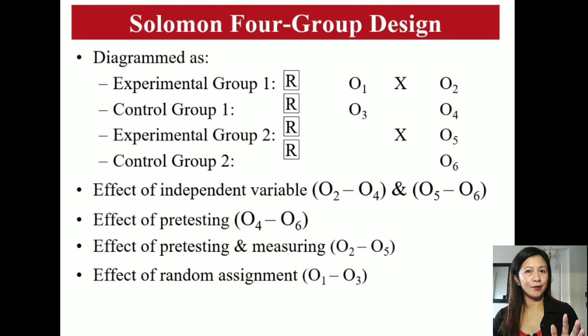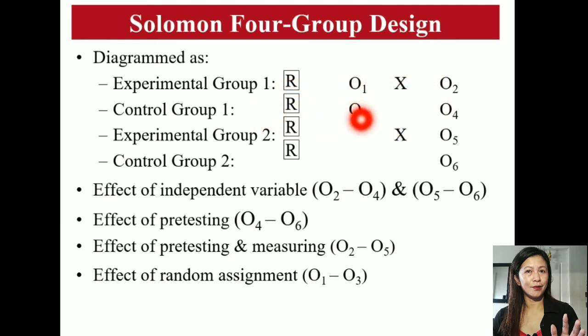The Solomon four-group design is more complex, combining the pre-test post-test control group design and the post-test-only control group design. There are four randomly selected groups: experimental group 1, control group 1, experimental group 2, and control group 2. The two experimental groups receive the treatment, only the first two groups take the pre-test, but all four groups take the post-test. Statistical analysis then determines significant differences to support or refute the hypothesis.